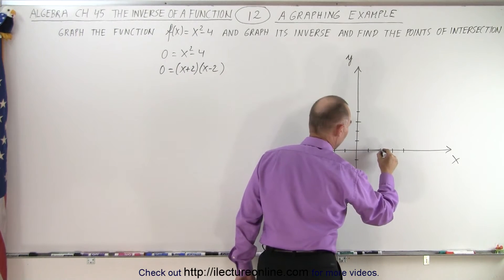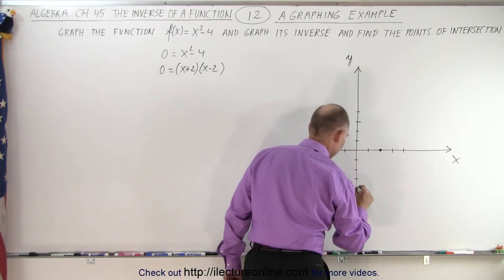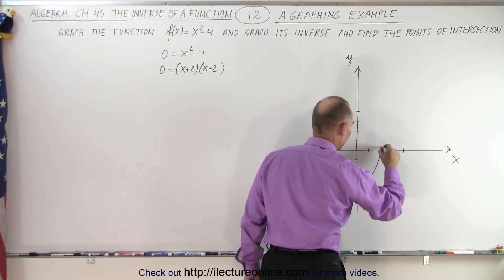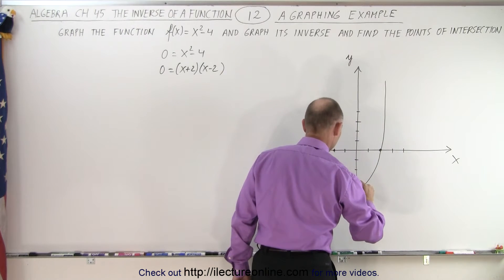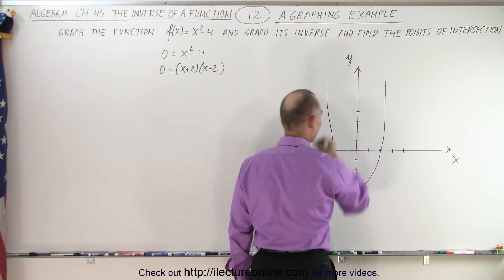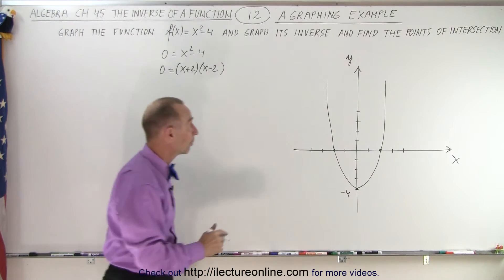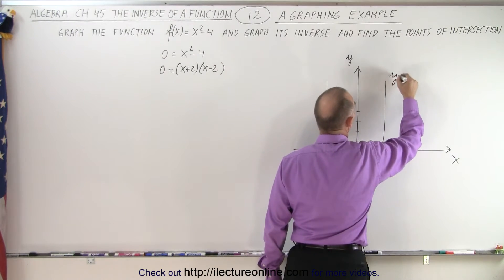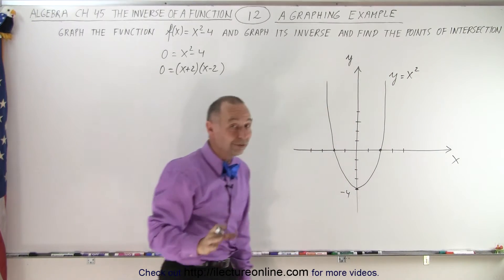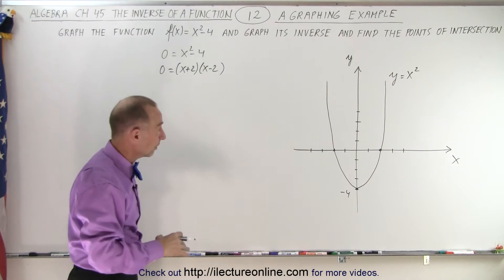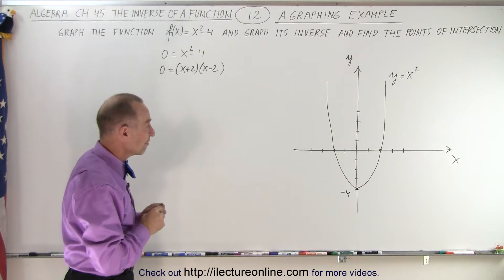So we see that it crosses there, there, and there. So this then allows us to graph the parabola. Not too bad, a little bit too far to the left here, but that's quite all right. So there's our parabola for the function y equals x squared minus 4. Notice that it's not a one-to-one function, which means that its inverse is not going to be a function.